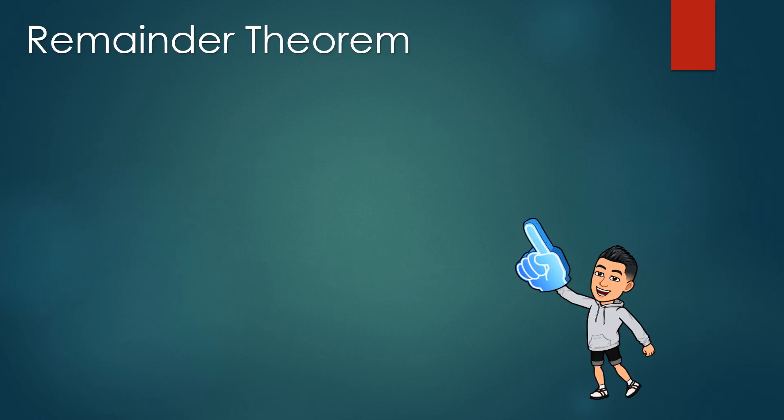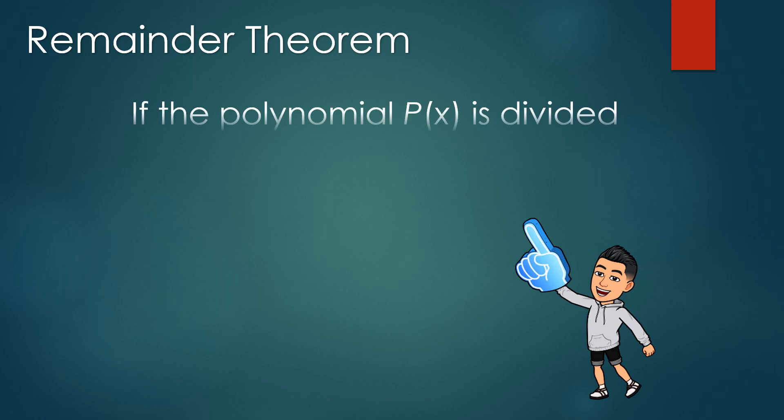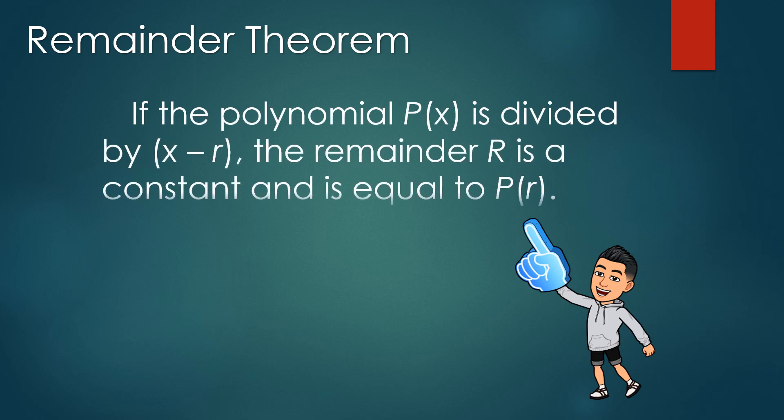The remainder theorem states that if the polynomial P of x is divided by x minus r, the remainder is a constant and is equal to P of r. This means that if we divide a polynomial by another polynomial, the remainder we get is the same as the result of evaluating the polynomial using the value of x from the divisor.